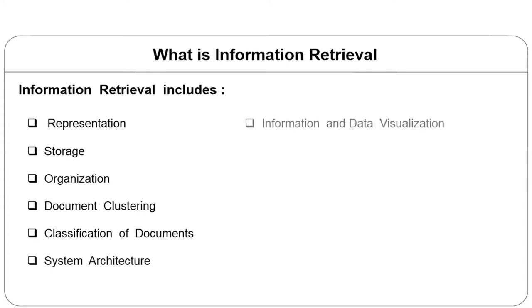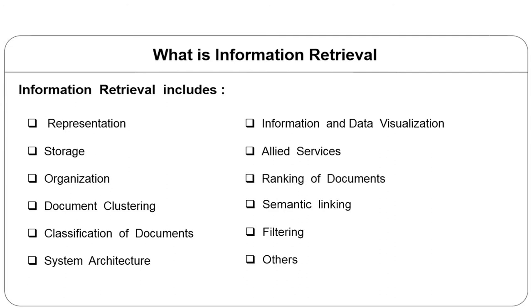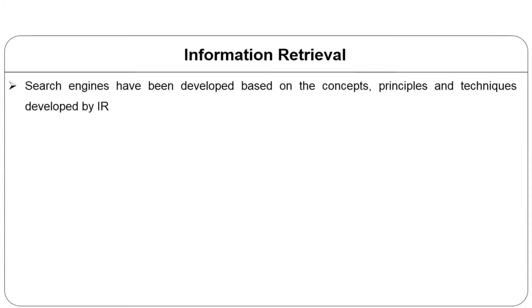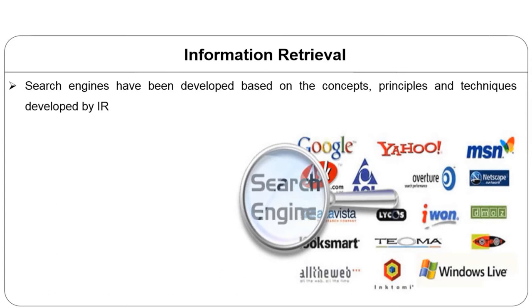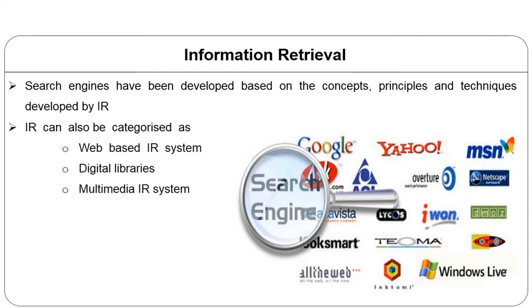What is information retrieval? Information retrieval includes representation, storage, organization, and accessing information which actually meets up with the users. IR includes document clustering and categorization, classification of documents, system architecture, information and data visualization, and some allied services—ranking of documents, cementing, linking, filtering, among many others. Searching tools have been developed based upon the concepts, principles, and techniques developed by IR. Based on the different types of services, IR can be categorized as web search or personalized IR, enterprise or institutional service-based IR, or domain-specific IRs. IRs can also be categorized as web-based IR system, digital libraries, multimedia IR, and distributed IR systems depending upon where it is deployed.